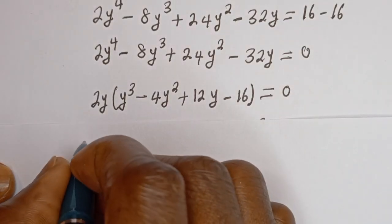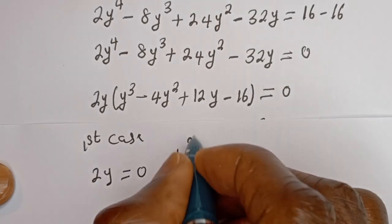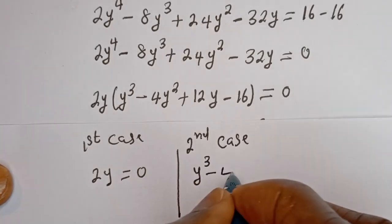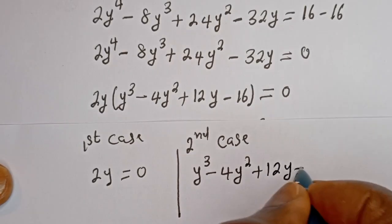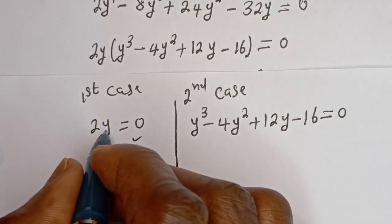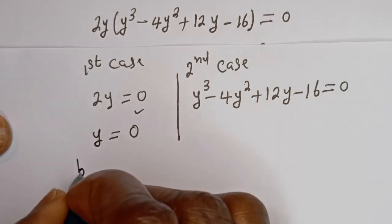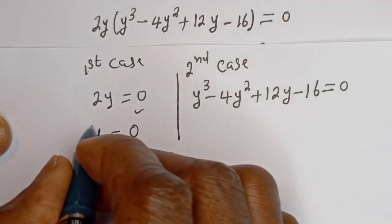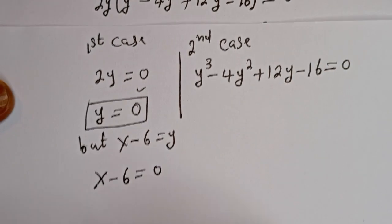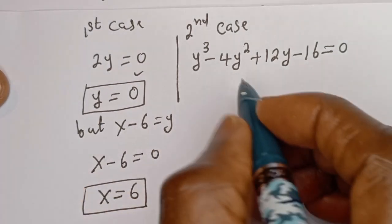From here there are two cases. The first case is 2y equals 0, and the second case is y³ - 4y² + 12y - 16 equals 0. From the first case, dividing by 2, y is equal to 0. But we know that x minus 6 equals y, so when y equals 0, x minus 6 equals 0, therefore x equals 6. We have our first solution x₁ = 6.